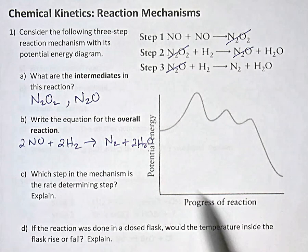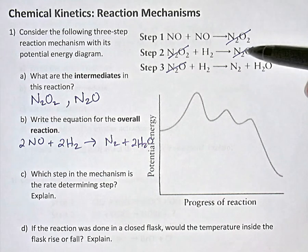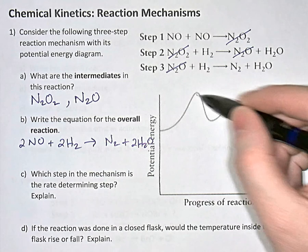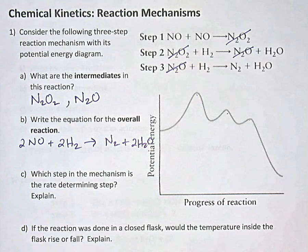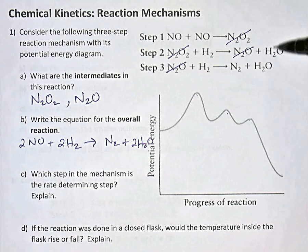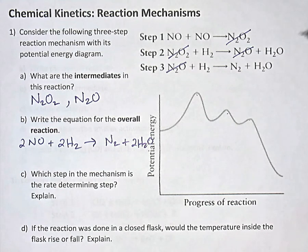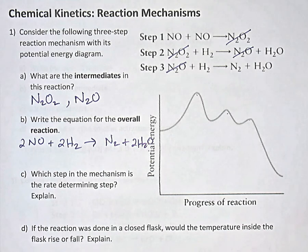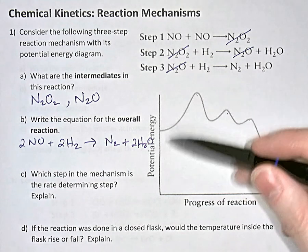Underneath the mechanism is a potential energy diagram for that reaction. Just like there were three steps in the mechanism, we see there are three bumps or three hills in the diagram. The question asks: which of the steps in the mechanism was the rate-determining step? Sometimes when you see the mechanism you'll see the word slow or fast beside each step — slow simply means the slowest of the three steps.